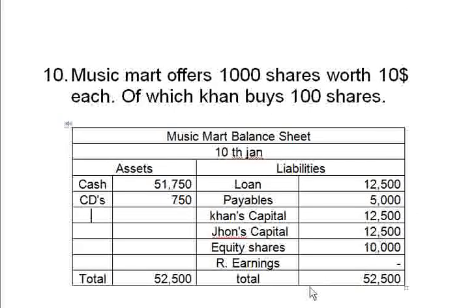Cash is now $51,750 — earlier it was $41,750 — so $10,000 worth of cash has been added to assets, and net assets increased to $52,500. This is not profit the company is making; the company is selling a share, so there is equity share worth $10,000 now. The retained earnings or net profit of the company is still zero.